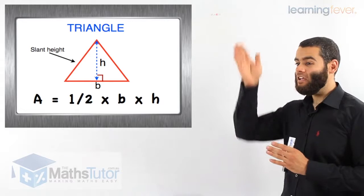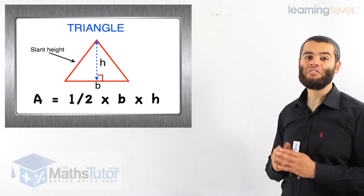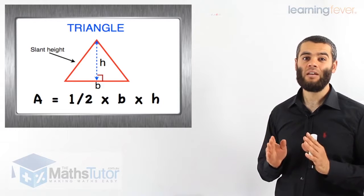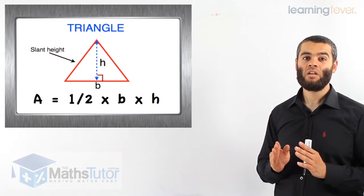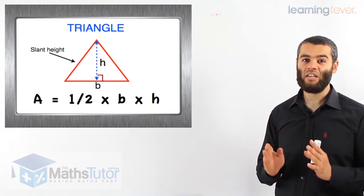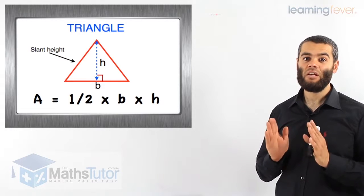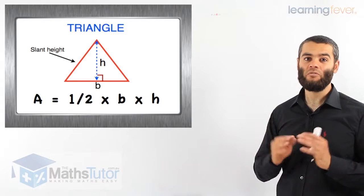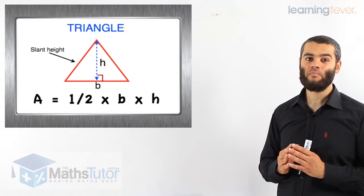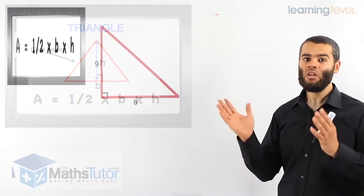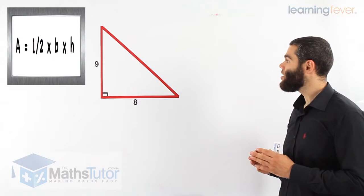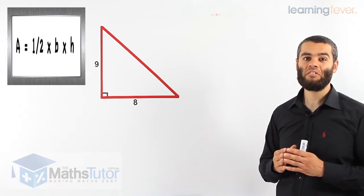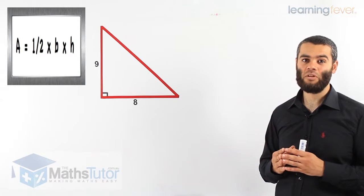The vertical height is the height that meets the base at a right angle. So whenever you're looking for the vertical height, look for the height that meets the base at 90 degrees. Very important rule to know. Now that we know what the vertical height is and what the base is, let's use the formula to work out the example here. I'm going to do a couple more examples to get you used to it even better.